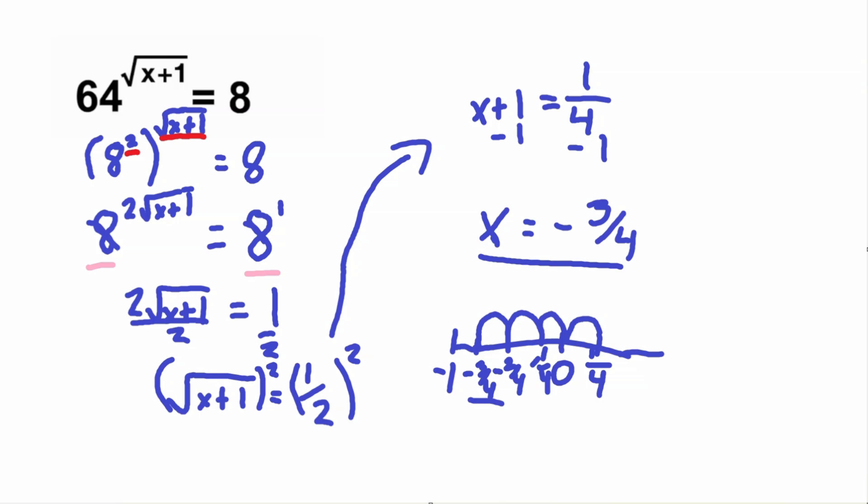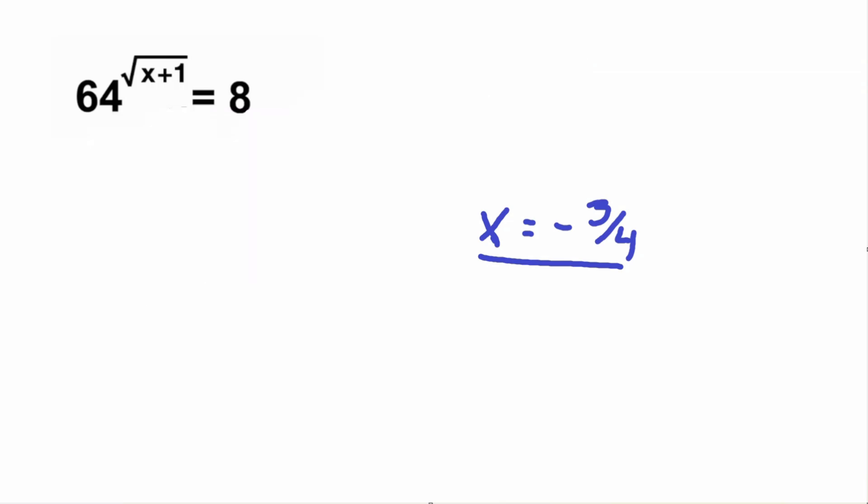But the final thing that we should always do is we should plug it in and check to make sure that it's the right answer. So let's go ahead and do that. If we plug in negative 3 fourths for x, we got 64 to the power of square root of negative 3 fourths plus 1 is equal to 8. And negative 3 fourths plus 1 is the same as 1 minus negative 3 fourths, which is equal to 1 fourth.